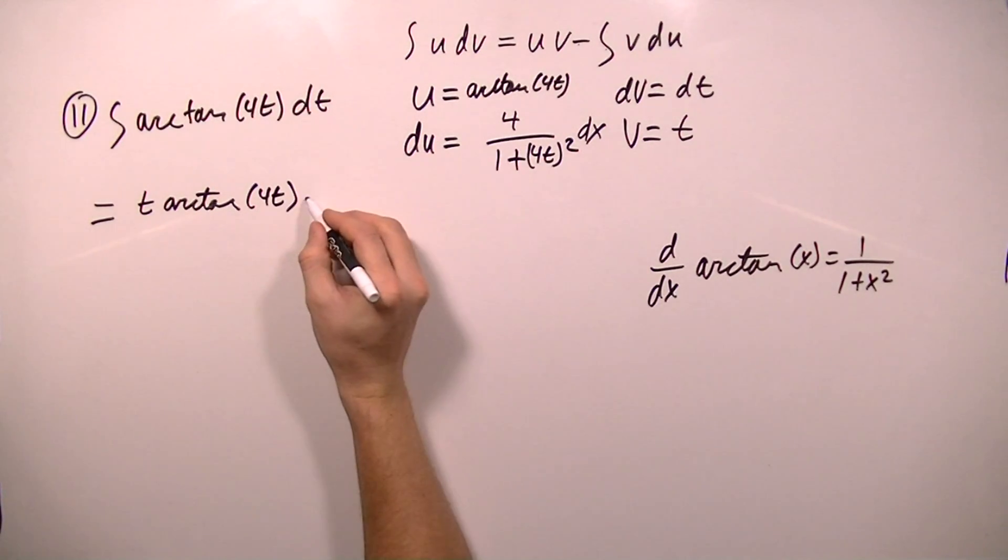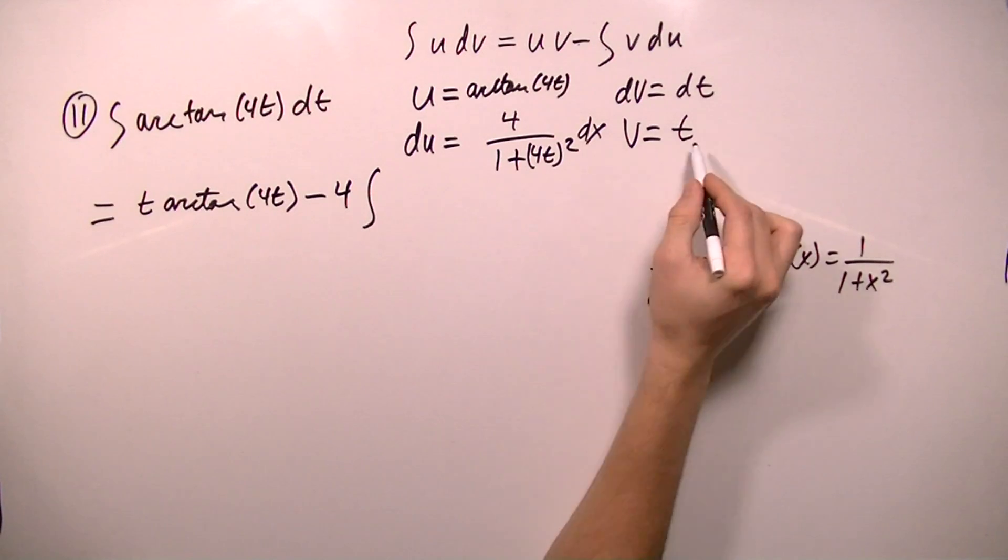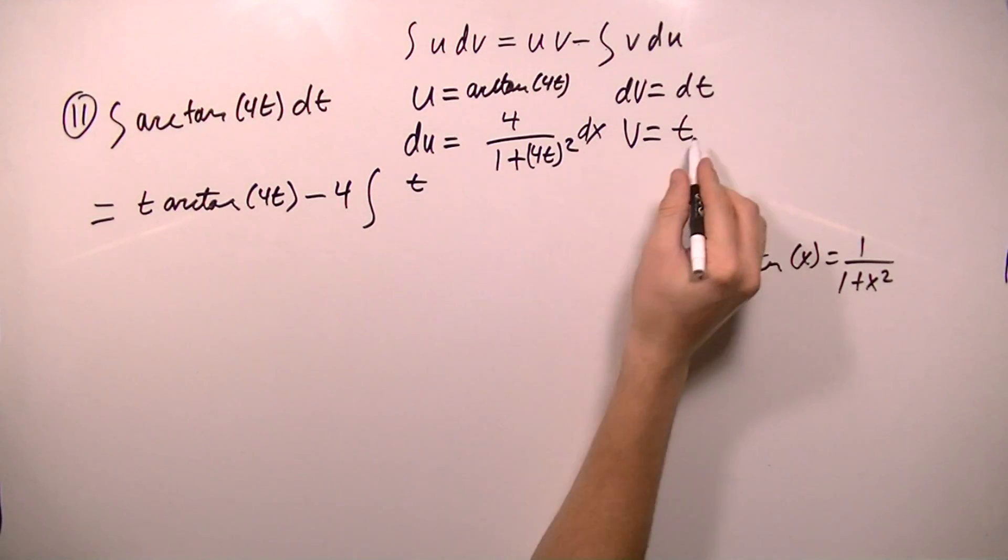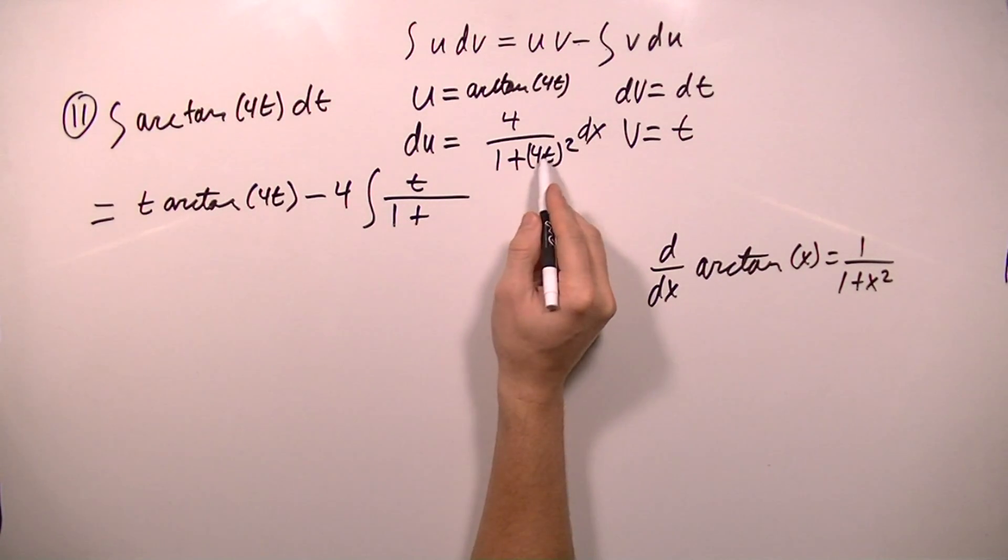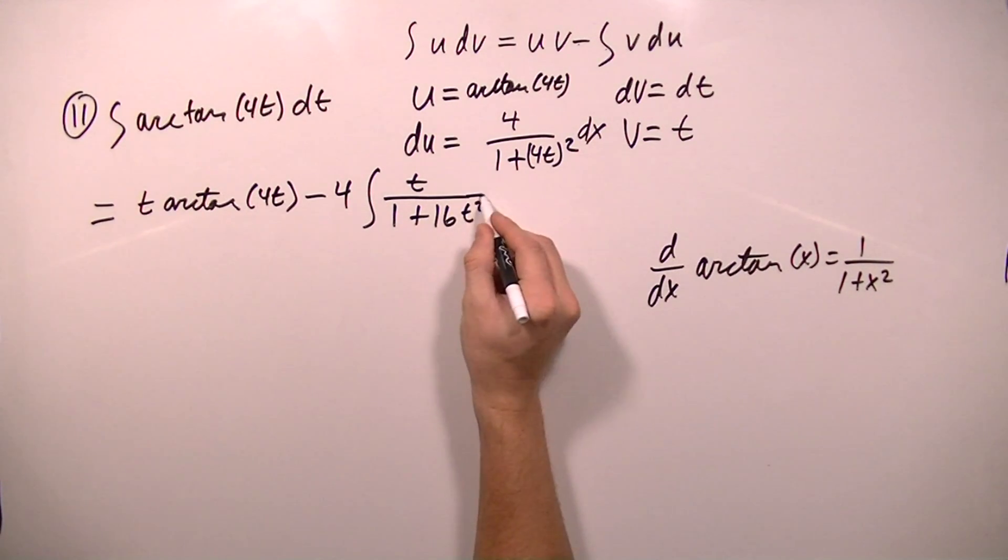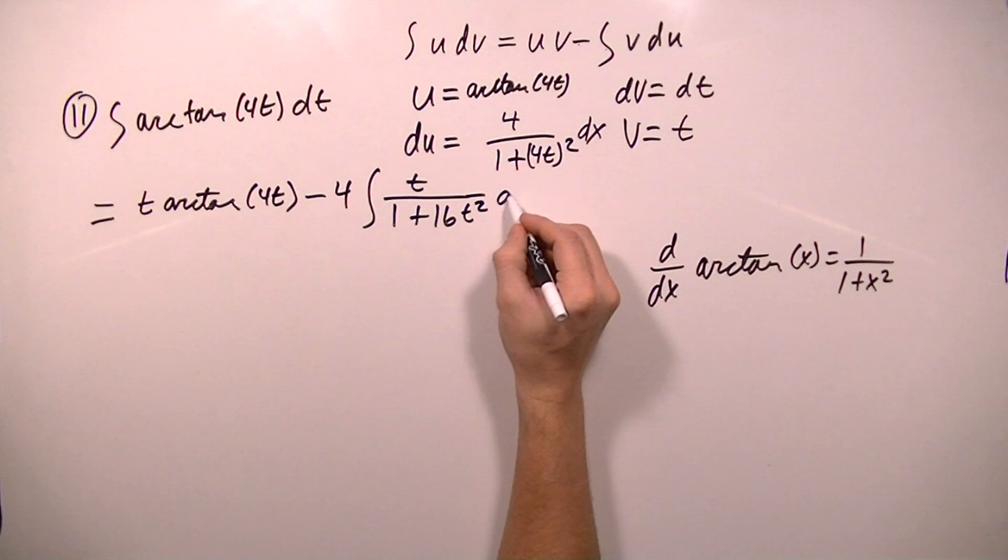So I'm going to start by factoring out this 4. It's going to be minus 4, and then I'm going to take the integral. And the t will be on top because I'm multiplying these two. And it's going to be t over 1 plus, and I'm going to go ahead and square this. So 4 squared is 16 and t squared is t squared, and then dx.